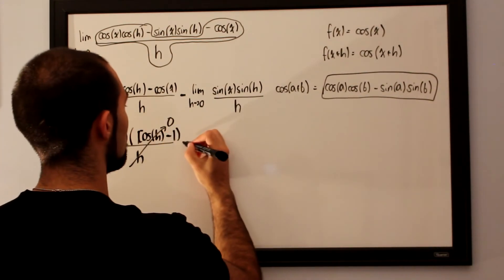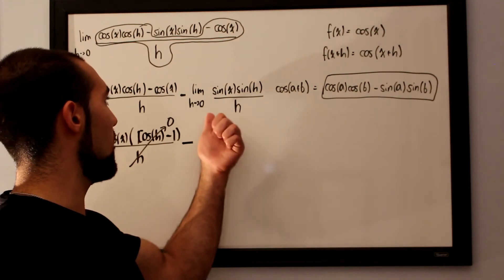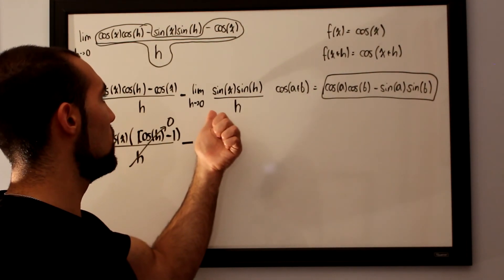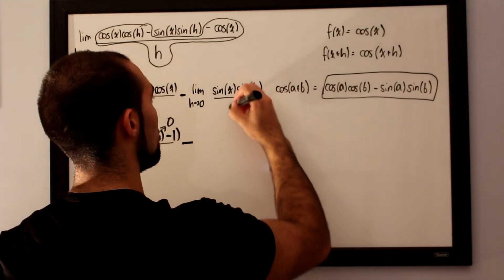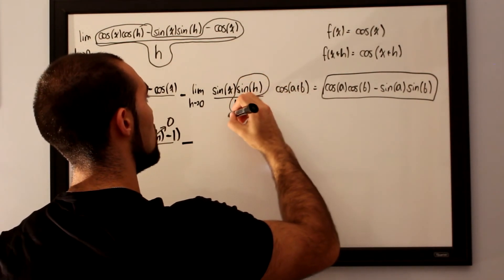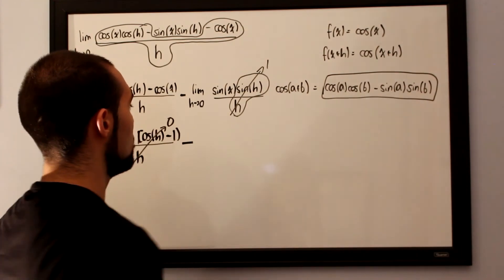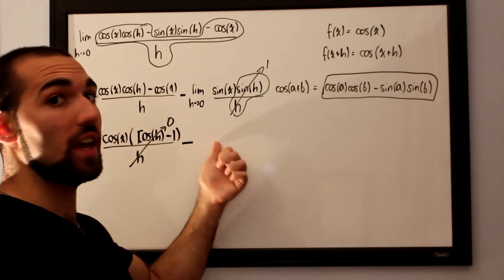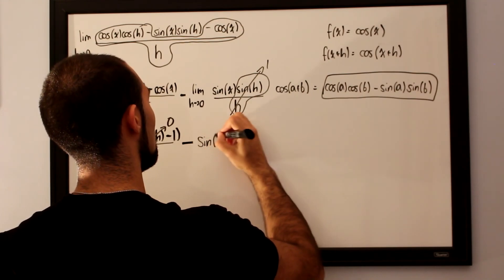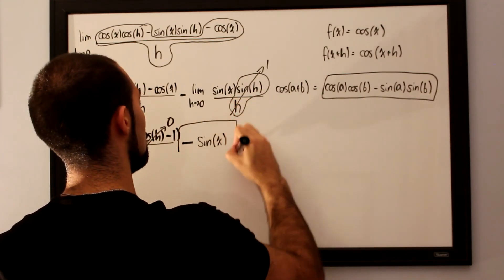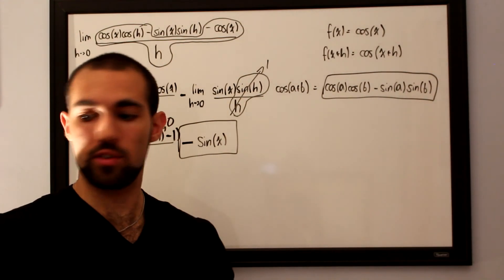And then we want to subtract off the second limit, which here we have a limit as h approaches 0 for sine of x, sine of h, over h. We know that these terms, sine of h, over h, go straight to 1. So all we have left over is negative sine of x. And that is the derivative of cosine of x.